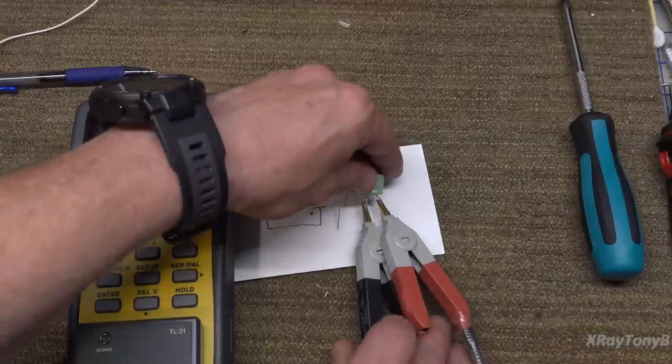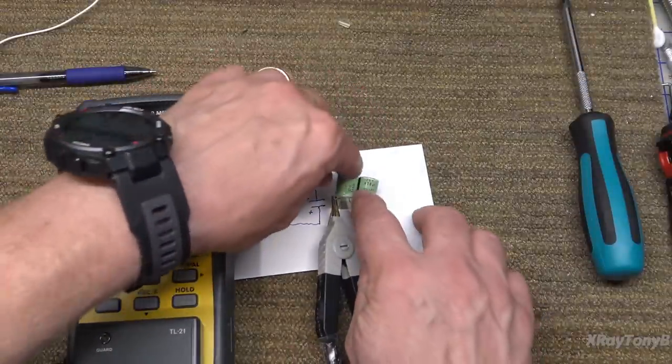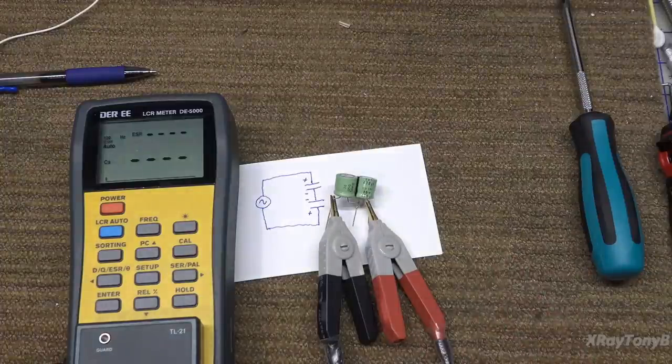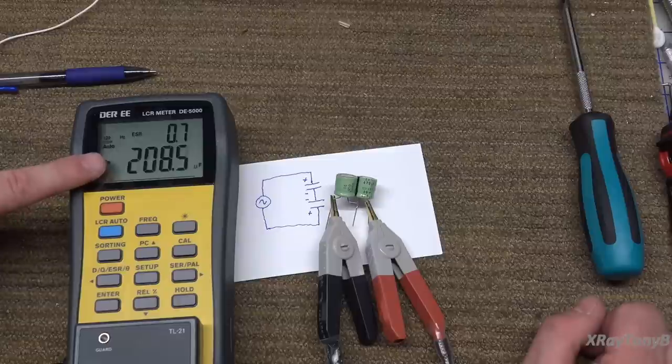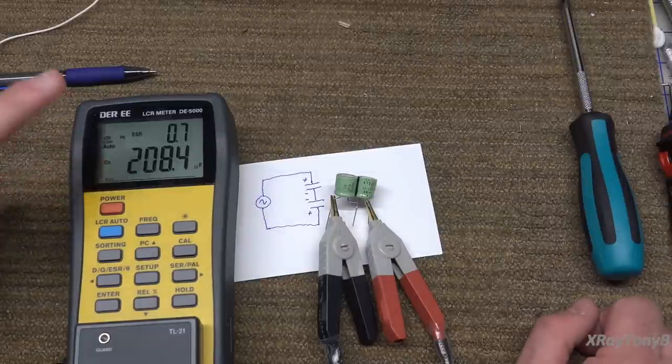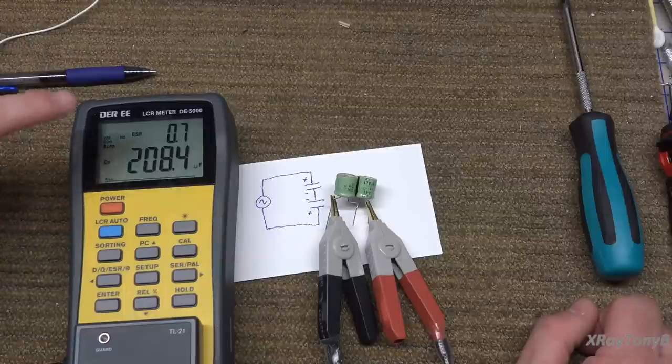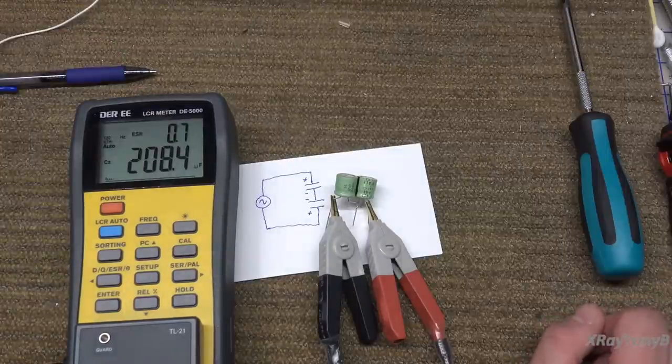If I take and measure across both of them, and they're wired back to back with the negatives together, you can see that the value cuts in half. Instead of a 400 microfarad capacitor, you now have a 200 microfarad capacitor. Also, the ESR doubles.